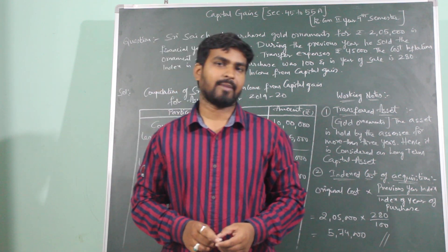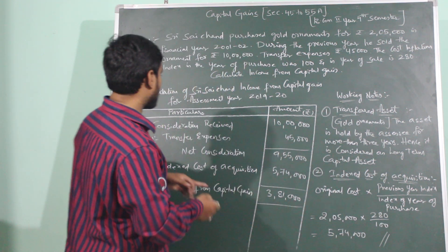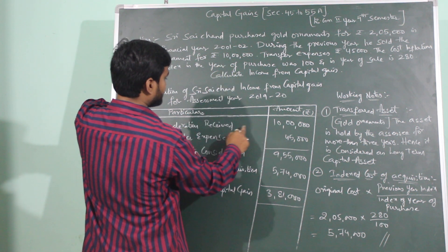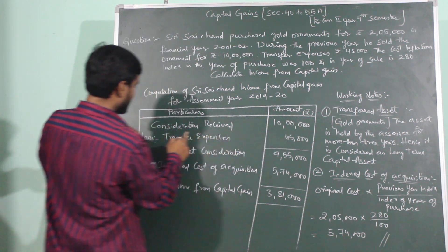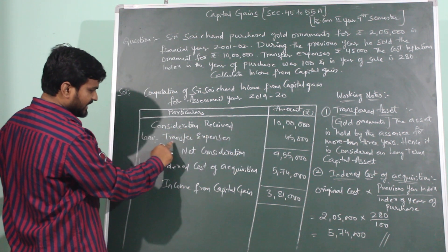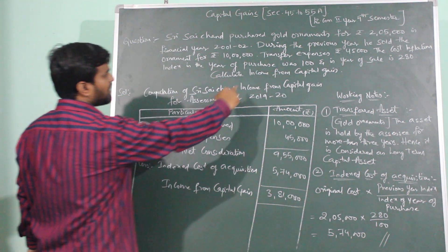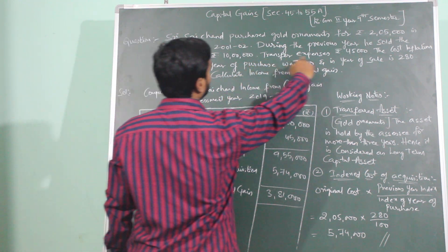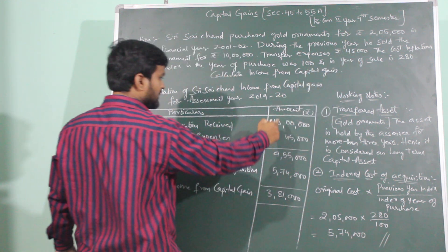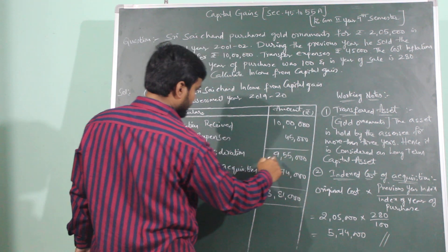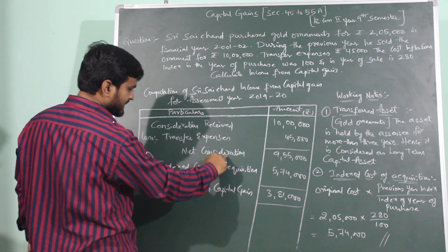Continuing with the problem. Consideration received is 10 lakhs. Less: Transfer expenses - the expenses incurred for selling - Shri Sai Chan had expenses of 45,000. So 10 lakhs minus 45,000 equals 9 lakhs 55,000, which will be called as net consideration.